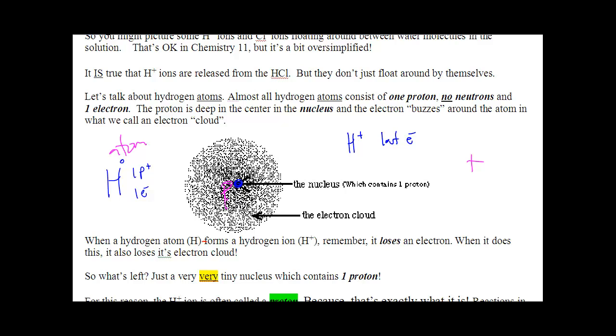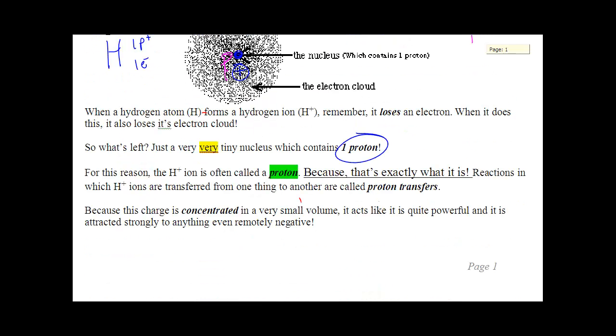So normally, you'd have your proton in your center and your electron floating around an orbital. But when you get rid of that electron, there's nothing floating around that orbital anymore. So all you are is just one big, dense, insanely small, powerful, positive charge. So this H+, really, is just a proton. And that's what we call it from here on in. We're not going to say H+, we're going to say proton, because that's exactly what it is.